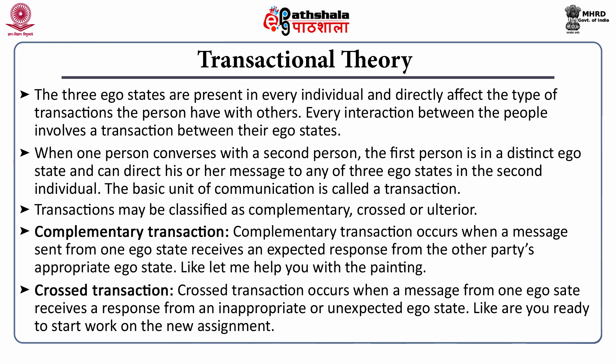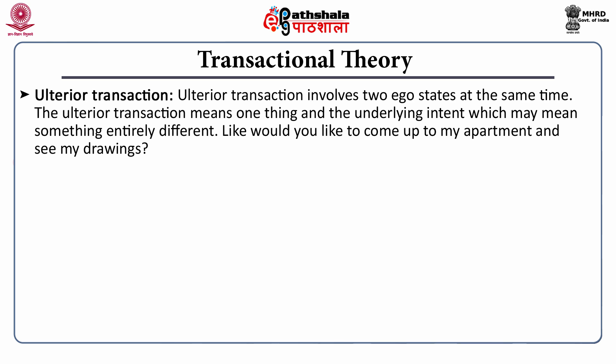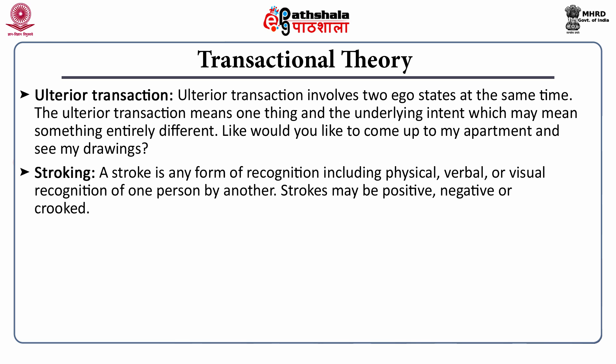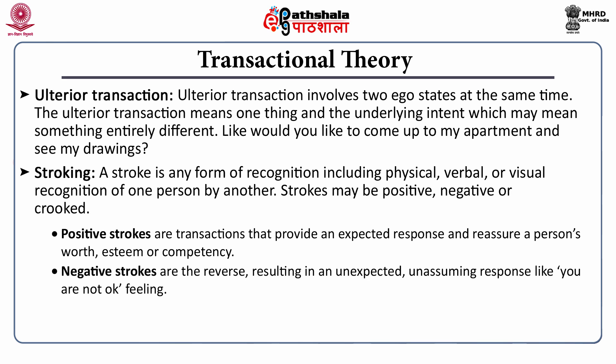A crossed transaction occurs when a message from one ego state receives a response from an inappropriate or unexpected ego state – for example, 'Are you ready to start work on the new assignment?' An ulterior transaction involves two ego states at the same time; it means one thing on the surface but the underlying intent may mean something entirely different – for example, 'Would you like to come up to my apartment and see my drawings?' Stroking is another concept related to transactions. A stroke is any form of recognition – physical, verbal, or visual – of one person by another. Strokes may be positive, negative, or crooked.